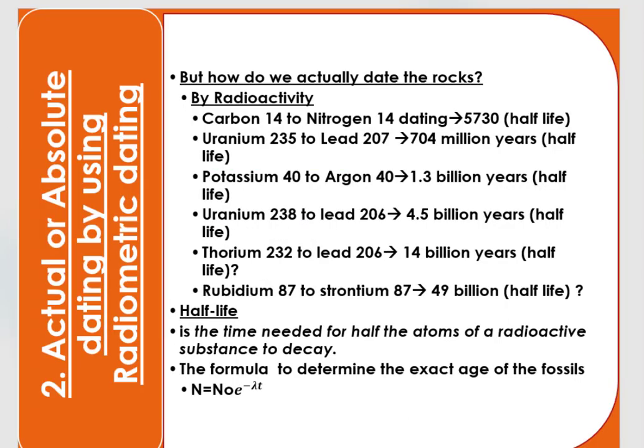The second type of fossil dating is absolute dating using radiometric dating. We can actually date rocks or fossils using radioactivity or radiometric techniques. Radiometric dating significantly depends on radioactive substances like carbon-14, uranium-235, potassium-40, uranium-238, thorium-232, and rubidium-87. Each radioactive substance has its own half-life.